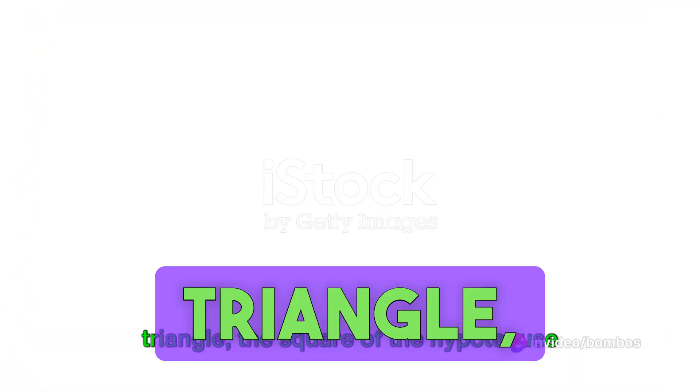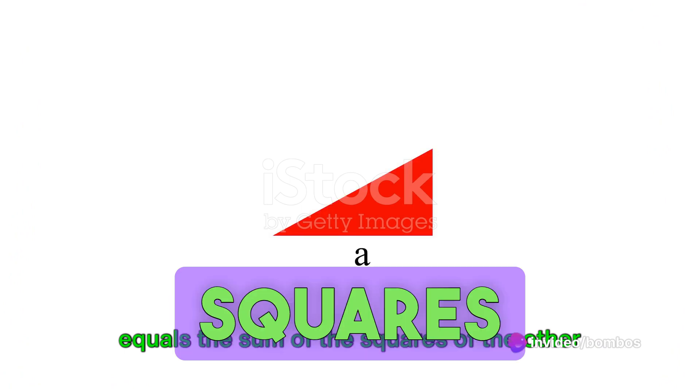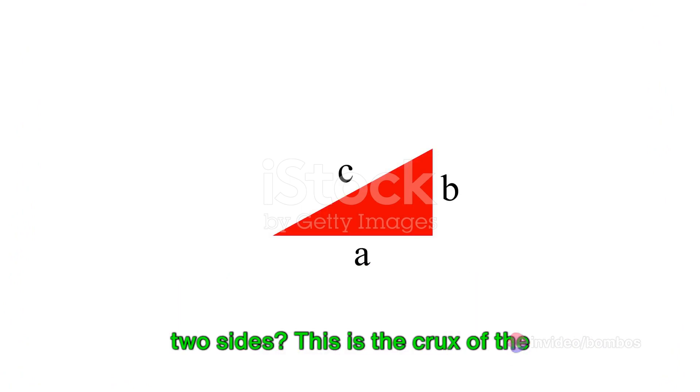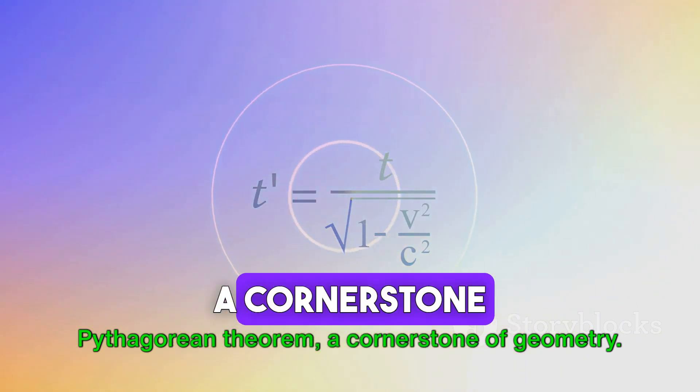Ever pondered why in a right-angled triangle, the square of the hypotenuse equals the sum of the squares of the other two sides? This is the crux of the Pythagorean theorem, a cornerstone of geometry.